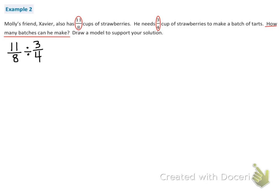I have different denominators. I need to find common or like denominators. To do that, I need to find the lowest common multiple of 8 and 4, which is 8. I need to find an equivalent fraction to 3 fourths that has 8 as a denominator. An equivalent fraction to 3 fourths is 6 eighths. So I'm going to write my new equation: 11 eighths divided by 6 eighths.